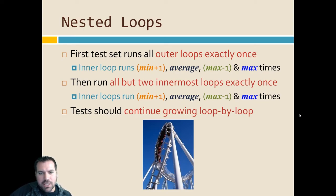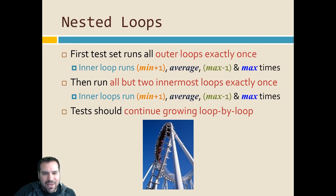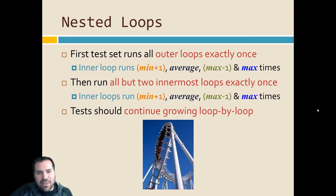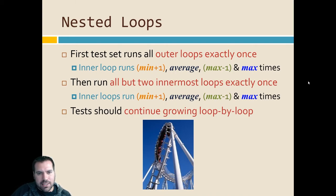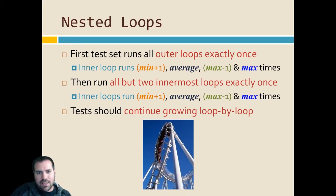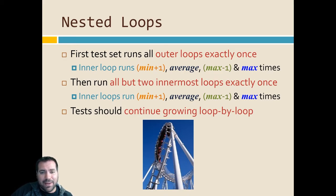Next are nested loops — this gets trickier. With nested loops you want to test combinations of how many times each loop runs. Start with the outer loop executing exactly once and treat the inner loop like a simple loop. Then start varying your outer loop: have it run max times, one time, two times, zero times; have your inner loop run zero times — all the combinations that make sense for your specific application. If you're using nested loops, you probably have a very specific reason, so make sure you're testing what makes sense for your situation and hitting all those weird cases.